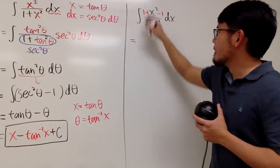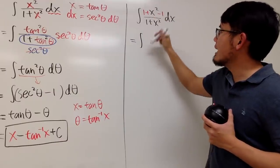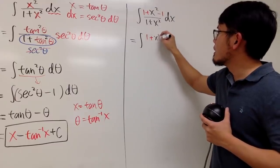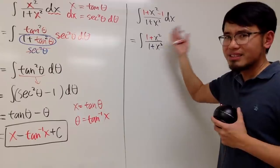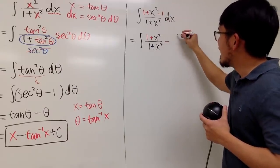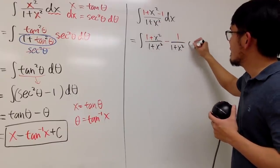So now, let's see, we can pair things up. Look at the integral of this guy, which is 1 plus x squared over this denominator. This is just 1. This is so nice. And then I'll bring down the minus, the 1, over the denominator, 1 plus x squared. And let's close that.